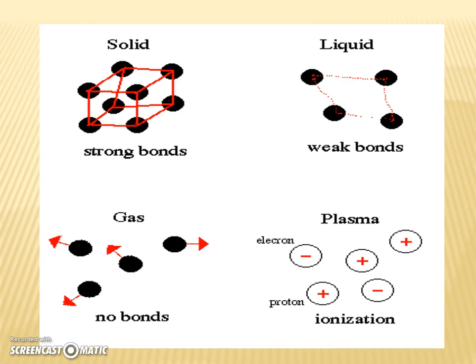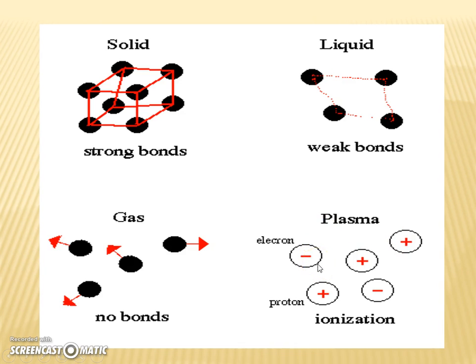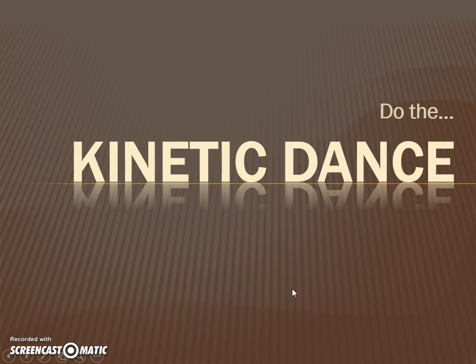Here's another picture showing that solids have strong bonds, liquids have weaker bonds but are still held together, and gases have no bonds — they're flying around in a much faster, unorganized pattern. Plasma is the same as gas but should show negative and positive charges with arrows. We're going to be doing a kinetic dance in class tomorrow, thinking about what you would look like as a molecule in each phase of matter.